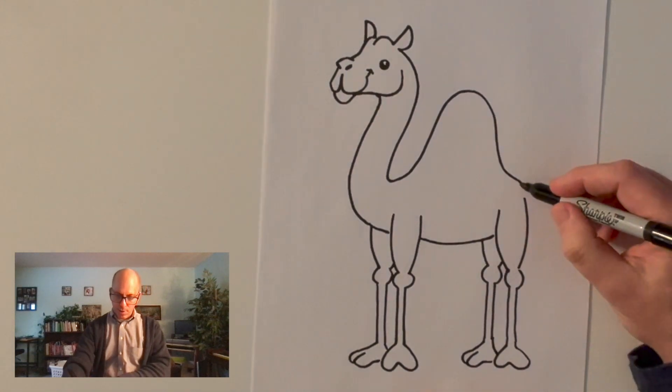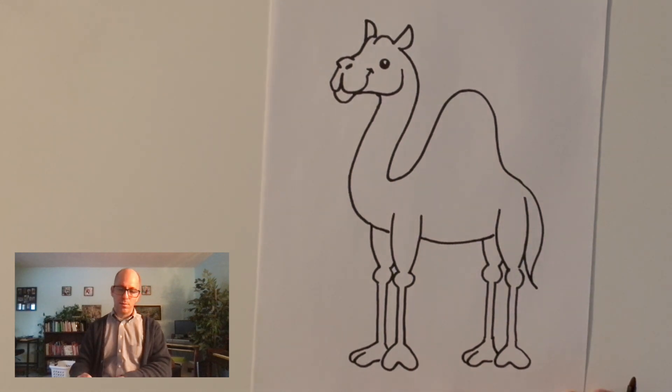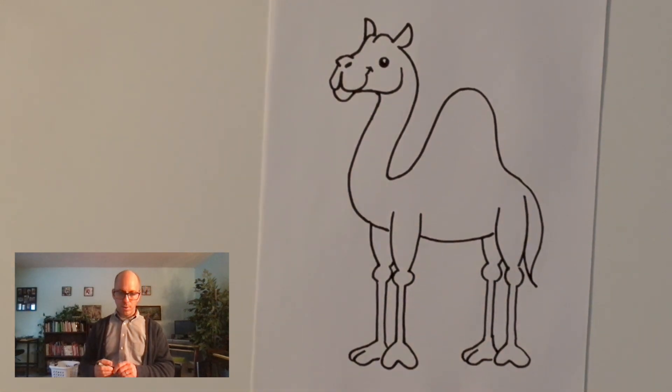And the last little detail here is the camel tail. They have nice little kind of hairy tails. So there is my camel. It's a right stately looking friend.